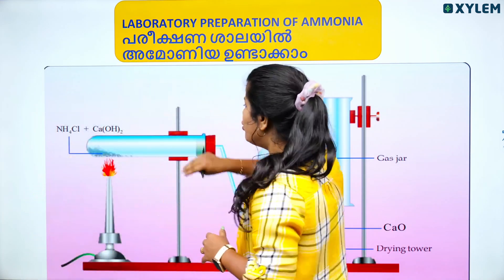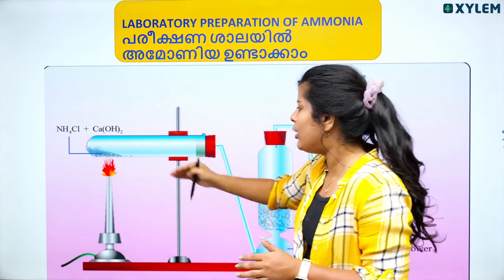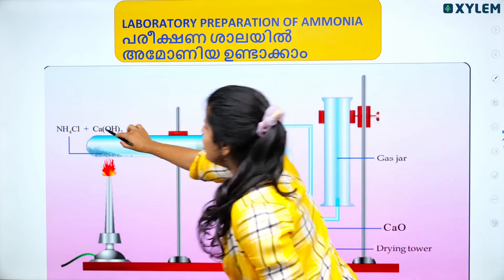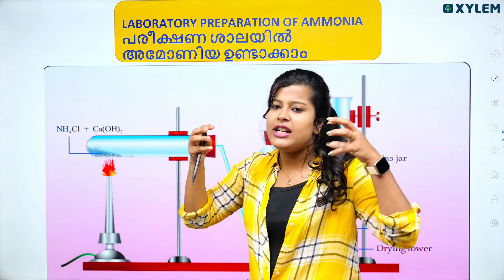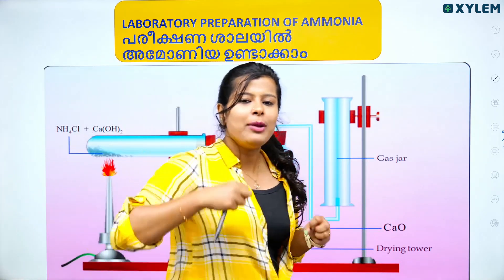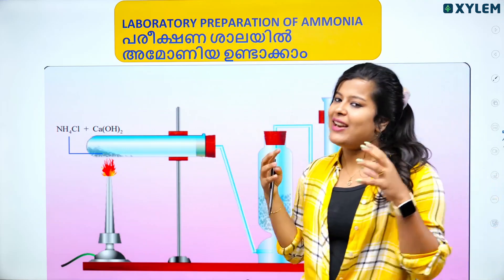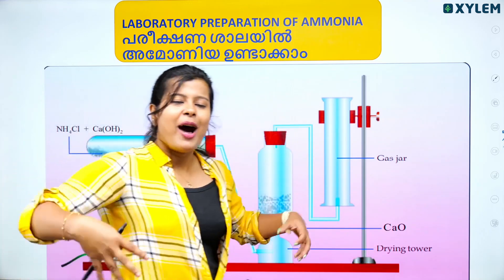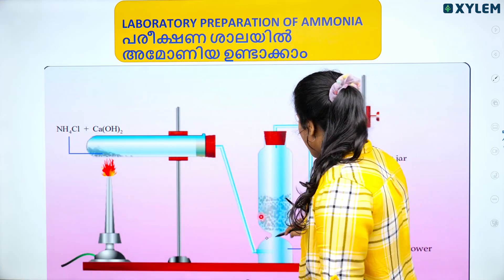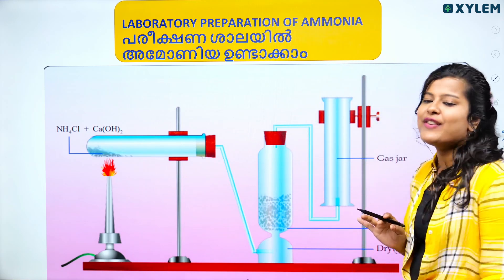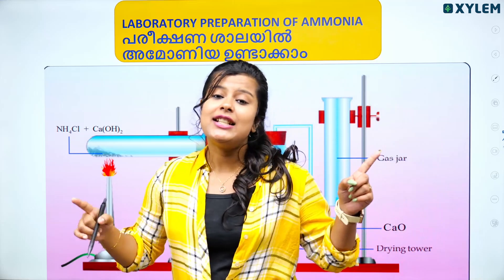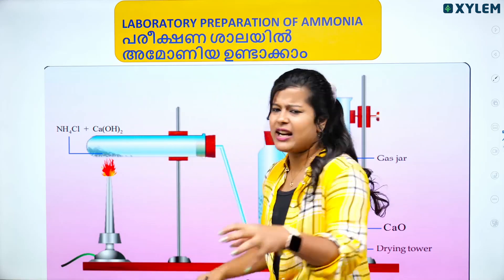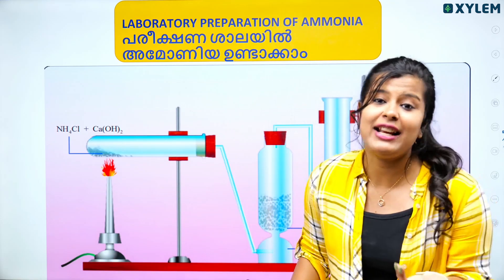We were learning the process. We use a test tube and heat it. We use ammonium chloride and calcium hydroxide — they are mixed together. Ammonium chloride and calcium hydroxide are heated with a small amount of heat. Then the gas is passed through a drying tower containing CaO to absorb the moisture.